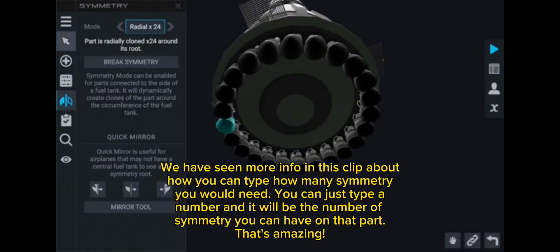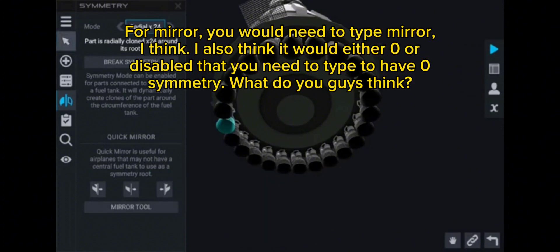We have seen more info in this clip about how you can type how many symmetry you would need. You can just type a number and it will be the number of symmetry you can have on that part. That's amazing! For mirror, you would need to type mirror, I think. I also think it would either zero or disable that you need to type to have no symmetry. What do you guys think?